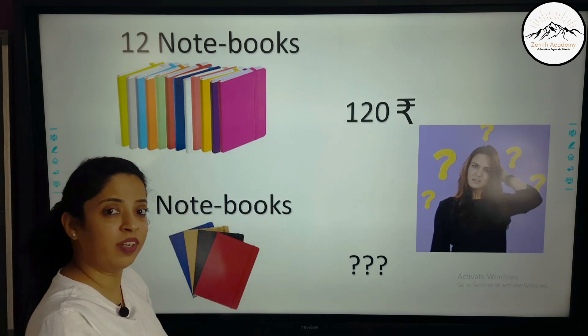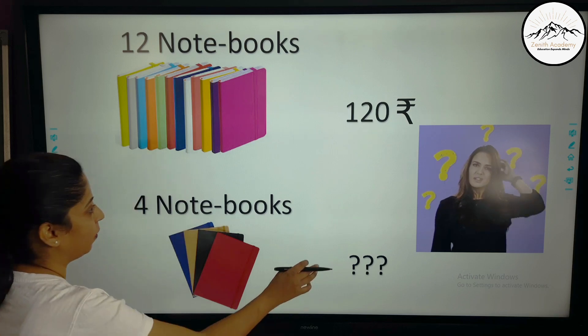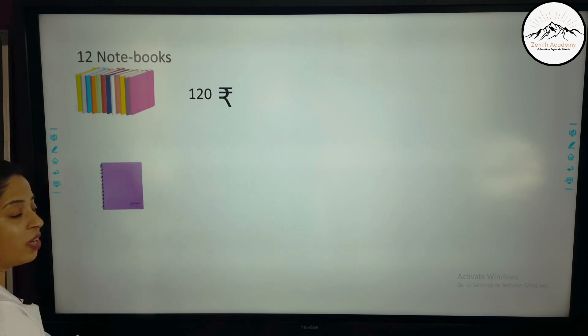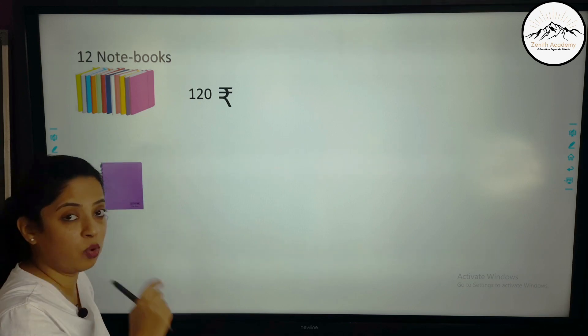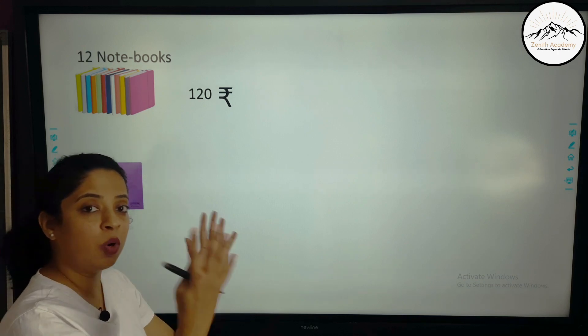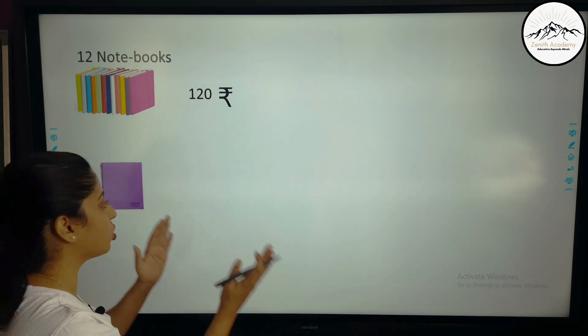Now here Unitary Method comes into picture. So the cost of 12 notebooks is 120 rupees. So first we will find the cost of 1 notebook and that is why the name is Unitary Method. So whatever quantity is given, we first find the cost of 1.